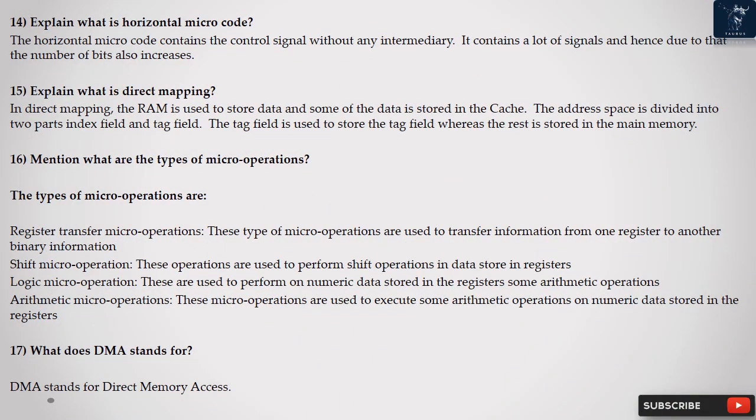Question 14: Explain what is horizontal microcode? The horizontal microcode contains the control signal without any intermediary. It contains a lot of signals and hence due to that the number of bits also increases.